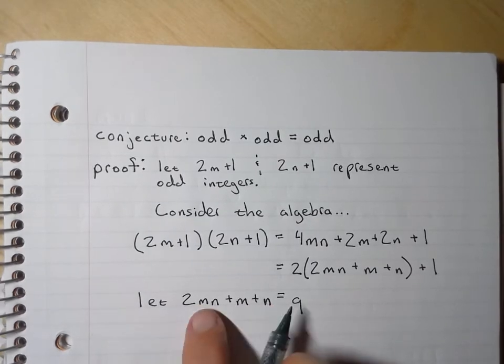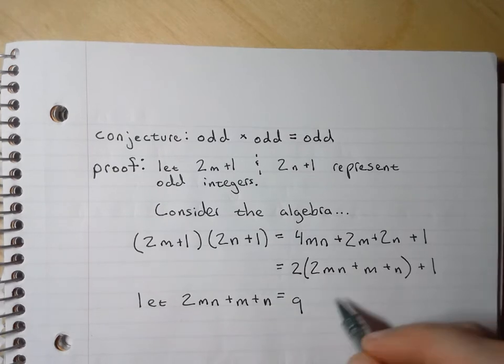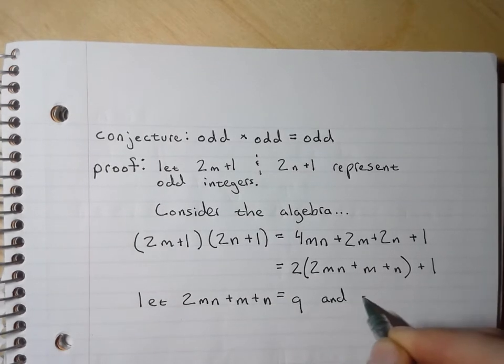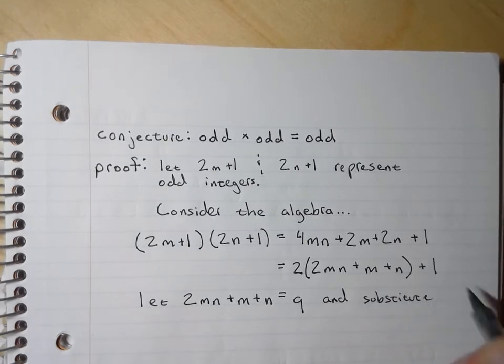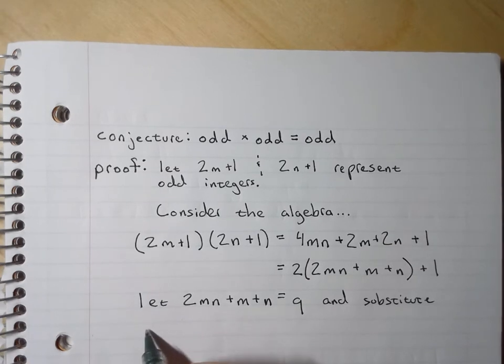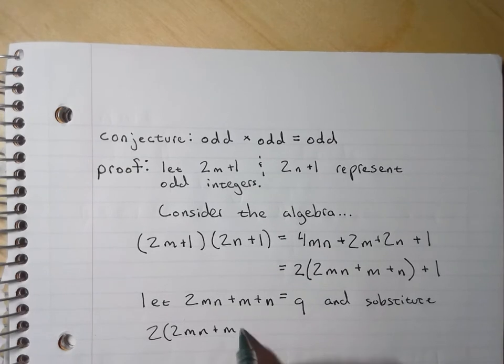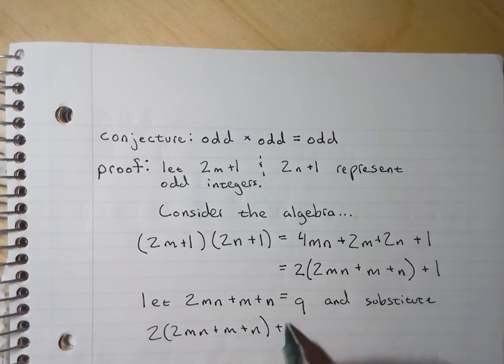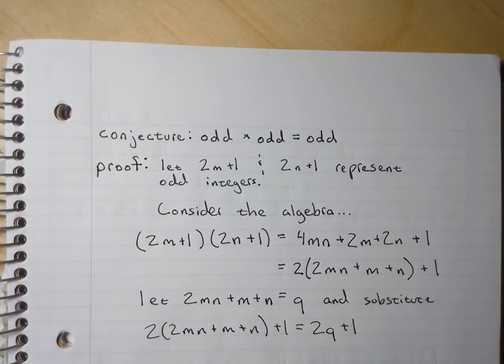So let 2mn plus m plus n equal q, and substitute. And now make a statement at the end.